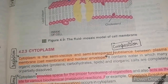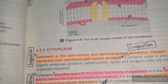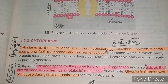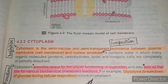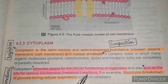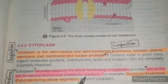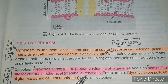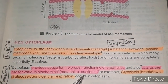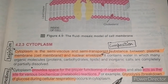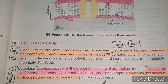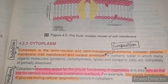The second function is that cytoplasm acts as a site for various biochemical reactions. Cells are the basic unit of life, and many chemical reactions occur within them. These biochemical reactions are necessary to maintain life, and they all take place in the cytoplasm. For example, glycolysis occurs in the cytoplasm.